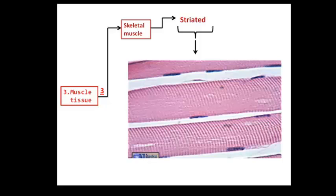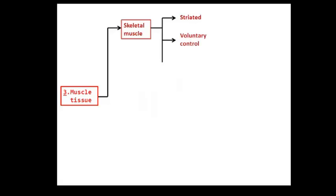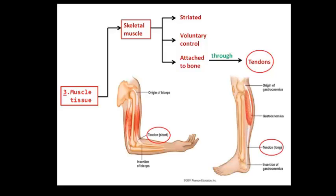Thirdly, we have the muscle tissue. There are three types of muscles. First, the skeletal or striated muscle, so called because it looks striped or striated under the microscopic view. And it is also under our voluntary control, plus it is called skeletal because they are attached to bones or to skeleton through tendons.